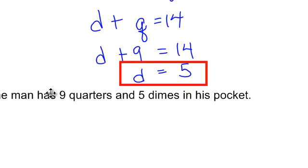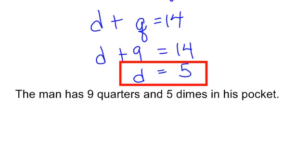So I now know with a little bit of help from math that that man has 9 quarters and 5 dimes in his pocket.